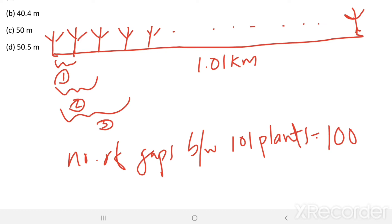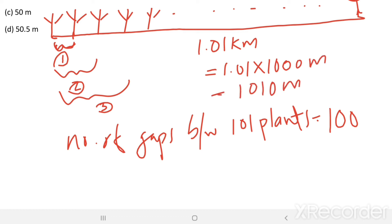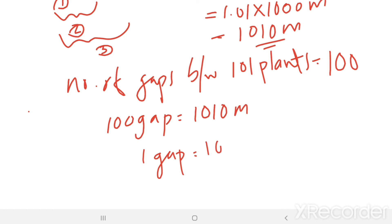So we need to find the value of one gap. 1.01 km equals 1.01 × 1000 m, which equals 1010 m. So 100 gaps equal 1010 m. Then each gap equals 1010 divided by 100, which is 10.1 m.